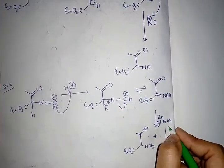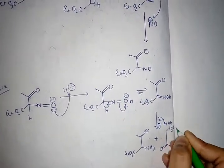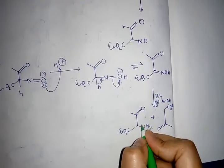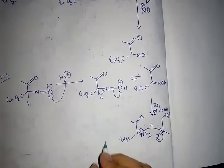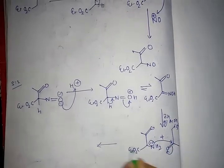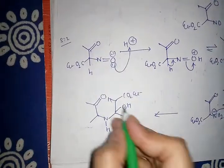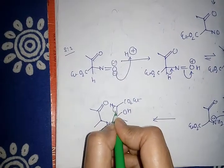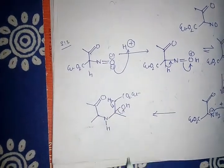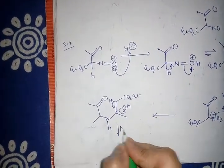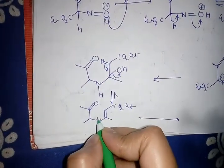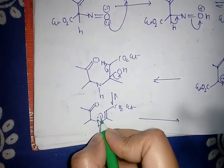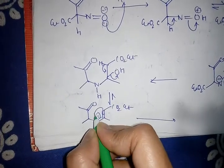The lone pair of nitrogen will attack the carbonyl carbon of ethyl acetoacetate. Then H2O leaves and an imine forms.